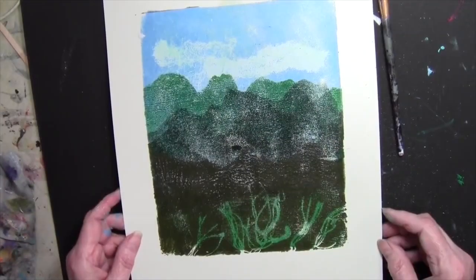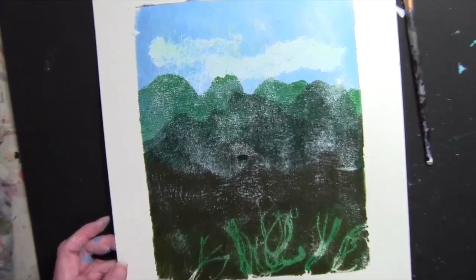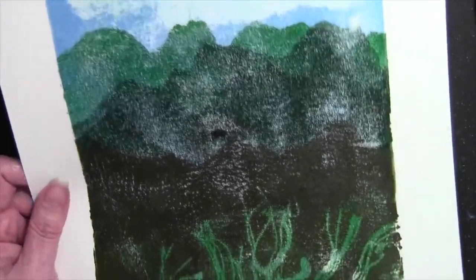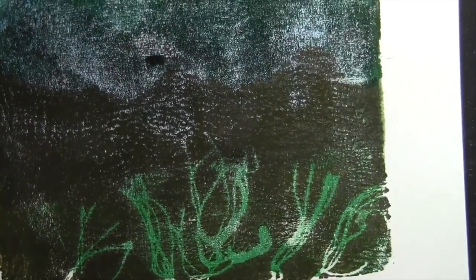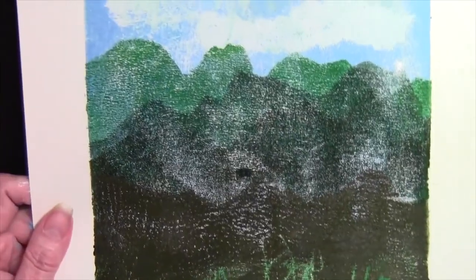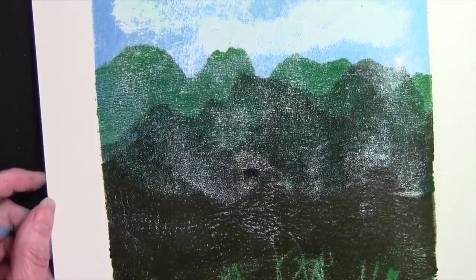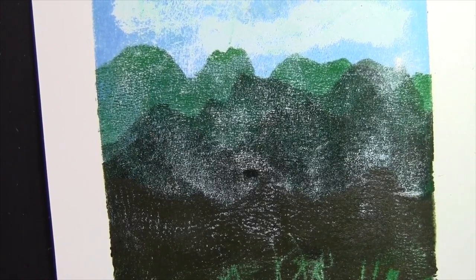So here is the final print. I'm going to zoom in here so that you can see that grass at the bottom made by the yarn. I think it looks great. Of course, the green underneath from the previous printing shows through. You can see here, you can see the three different colors of green. They're subtle.